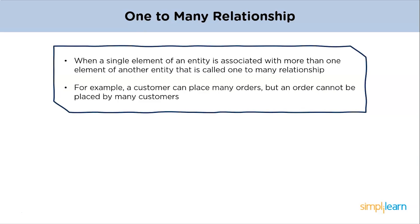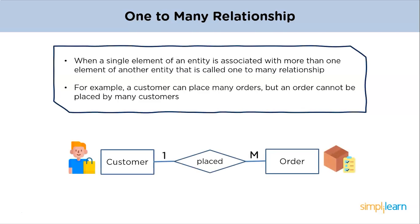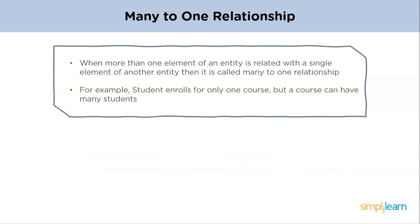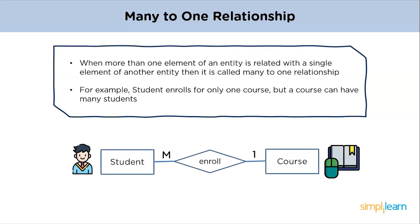One-to-many relationship is when a single element of an entity is associated with more than one element of another entity. For example, a customer can place many orders, but a particular order cannot be placed by many customers. Many-to-one relationship is when more than one element of an entity is related to a single element of another entity — for example, students have to opt for a single course, but a course can be opted by a number of students.